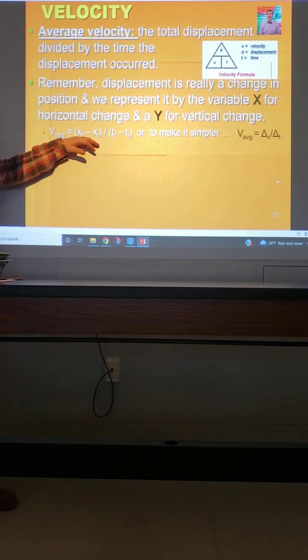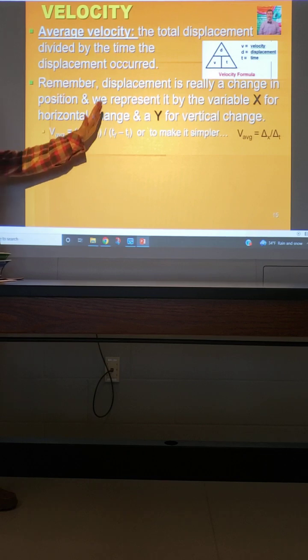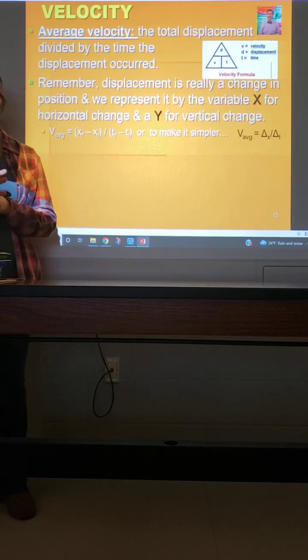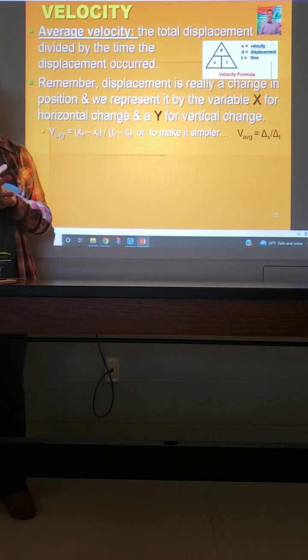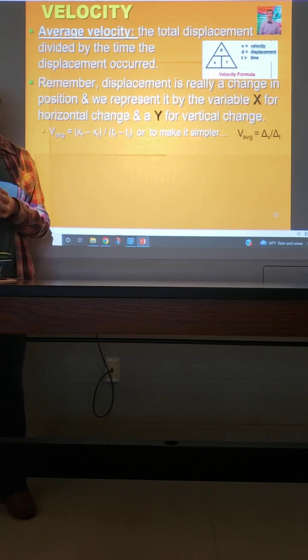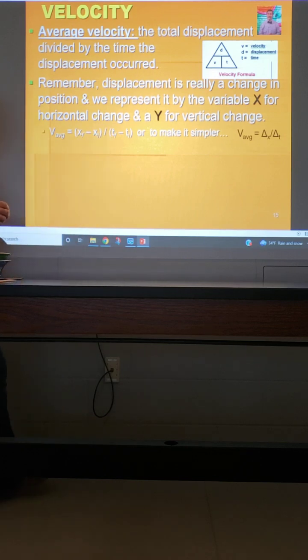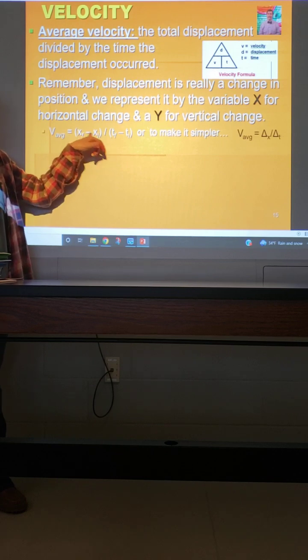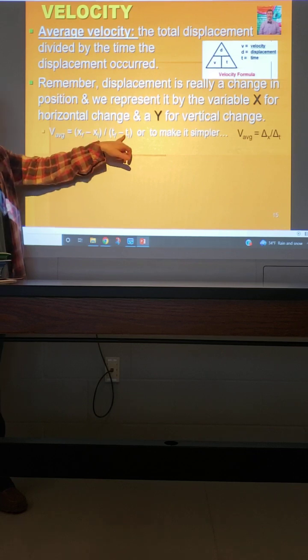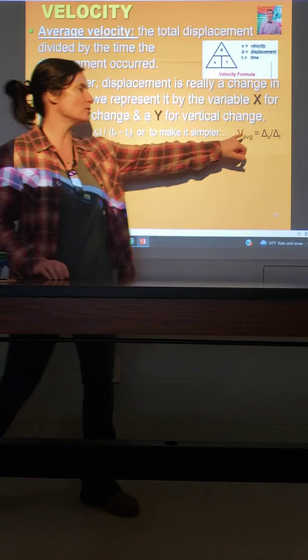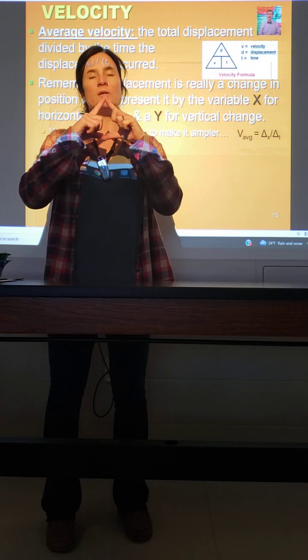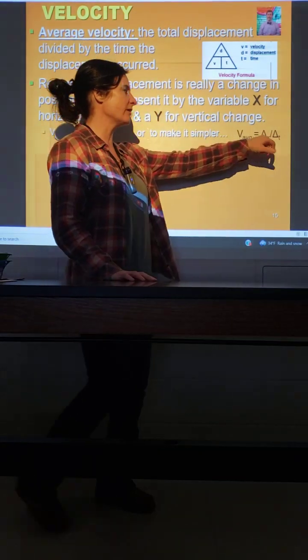So here's the first version of the equation. xf minus xi divided by tf minus ti. What do you think the t stands for? Any guesses? What do you think t is representing what variable? It is time. All of a sudden Carson's like, wait, it's time. Yes, it is time. And remember, the x is that position, that change in position, right? So we're taking our change in position, which is displacement, and dividing it by the change in time. And so this can also be simplified like this. Delta x divided by delta t. Remember, that little triangle is the Greek symbol for change. So this is just a simplified version of this.